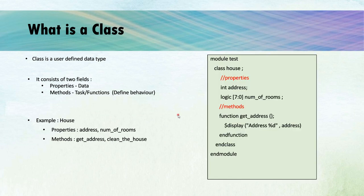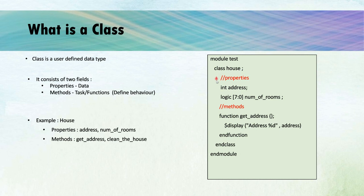Now let's understand how to create classes. One point to note here is that a class can always be defined inside a module or a package. That's why here I have defined the class inside a module test. I am defining the class house using the keyword class. First I am defining the properties field. I have defined the property address, which is of data type int. The second property is number of rooms, which is of data type logic. Now in the method section, I have defined a function get_address. We are using the dollar display function to print the address property of the class house.